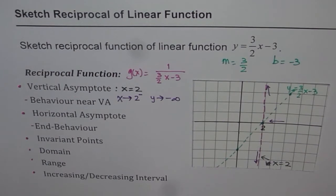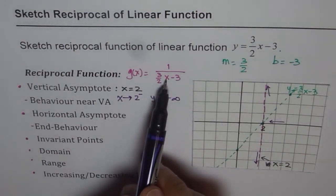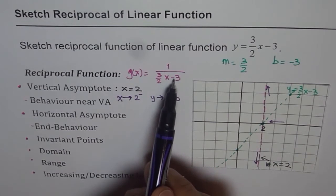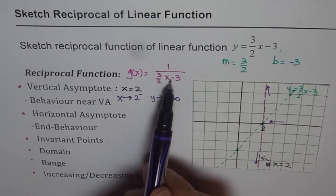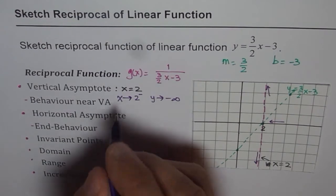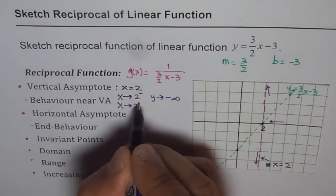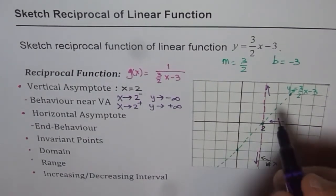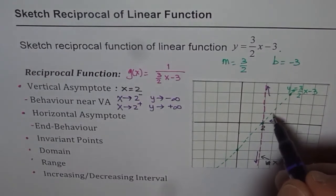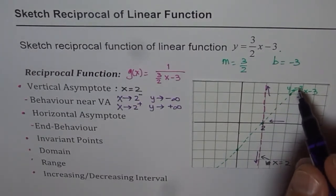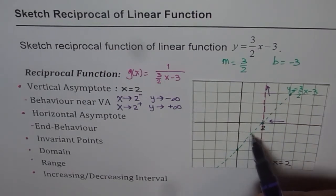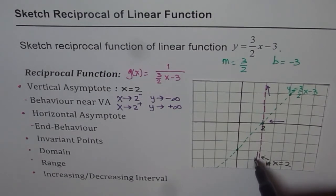Now if x approaches 2 from the positive side, it will approach positive infinity, since the value is positive and the reciprocal of a positive is positive. You can verify this with a calculator — plugging in 2.1, the denominator is positive but small, resulting in a larger positive number. So when you approach 2 from the right, y approaches positive infinity.